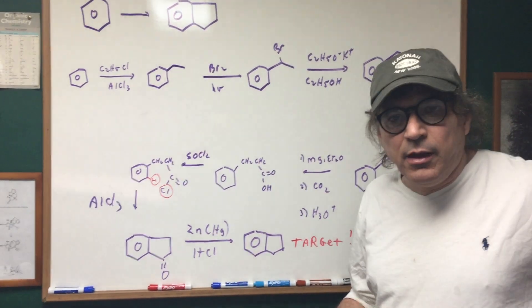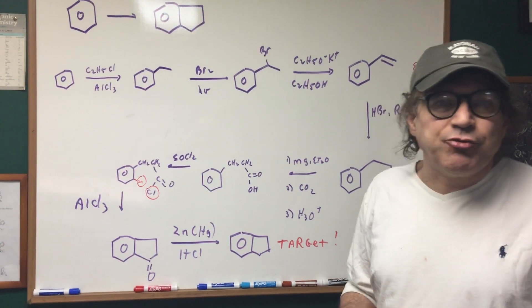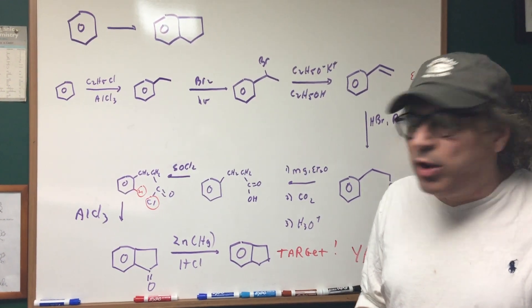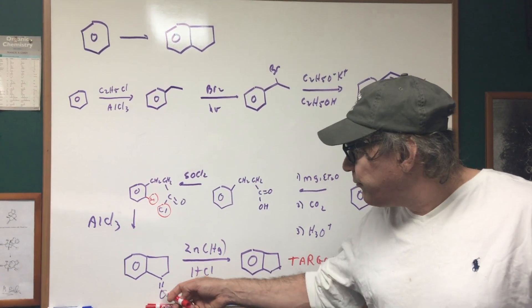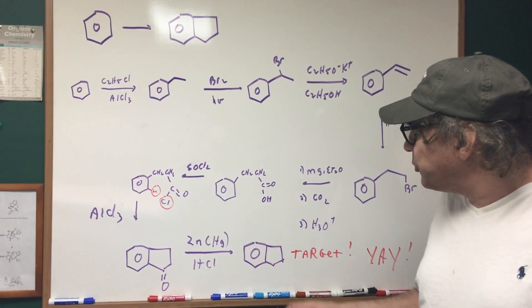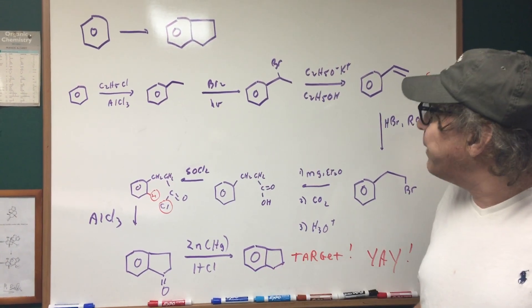I could either do a Clemmensen or a Wolf-Kishner. If you would have had hydrazine base and heat, you would have done the Wolf-Kishner. Here I elected to use amalgamated zinc and HCl to convert the carbonyl group into the methylene group, meaning there's two H's here. And that would be my final target.